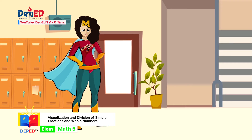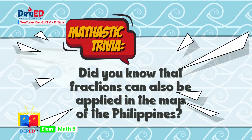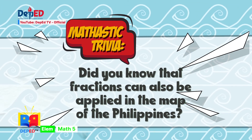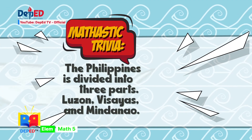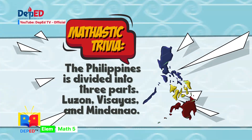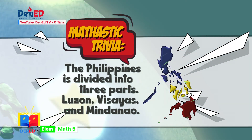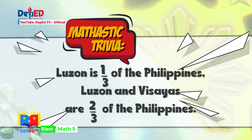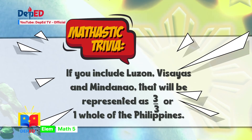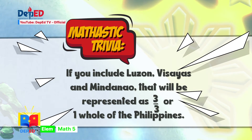To divide a whole number by a fraction, multiply the dividend by the reciprocal of the divisor. To find the reciprocal of a fraction, reverse the position of the numerator and the denominator. Fractions are well understood if represented by a circle or rectangular shape. It is easier to visualize halves, thirds, and quarters, or those denominators with more factors such as eighths and twelfths. Using fraction chips will help you visualize fractions. Did you know that fractions can also be applied in the map of the Philippines? The Philippines is divided into three parts: Luzon, Visayas, and Mindanao. Luzon is one-third of the Philippines. Luzon and Visayas are two-thirds. Including all three is three-over-three, or one-whole of the Philippines.